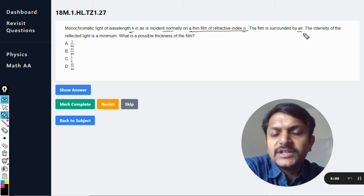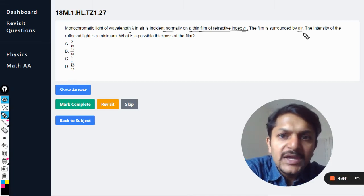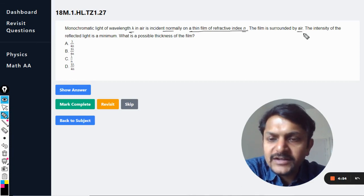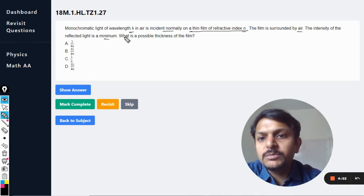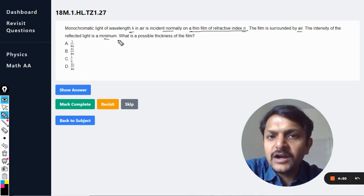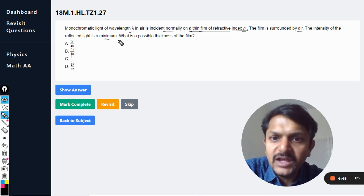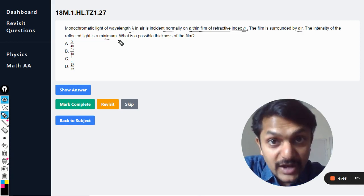It is evident that the question belongs to thin film interference topic. The intensity of the reflected light is minimum, so it means the reflected lights are getting interfered destructively. What is the possible thickness of the film?